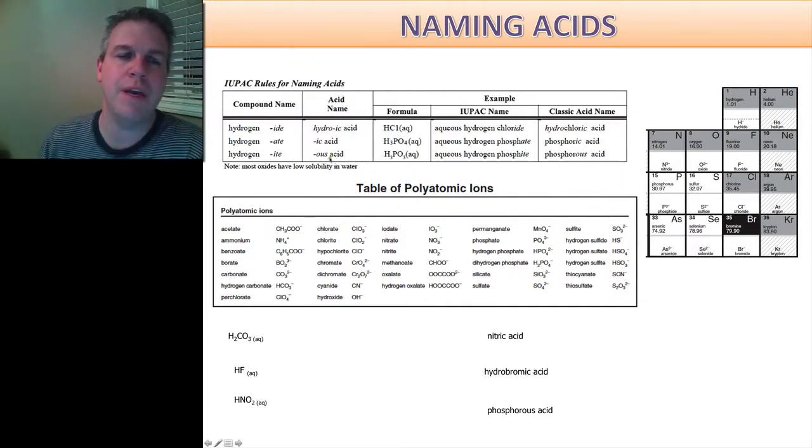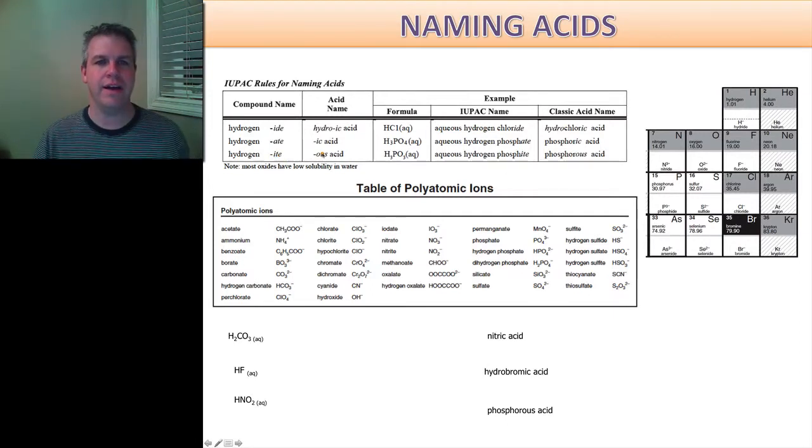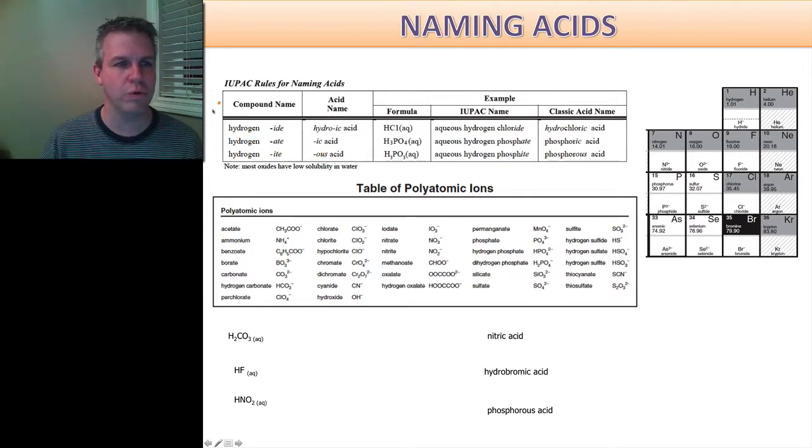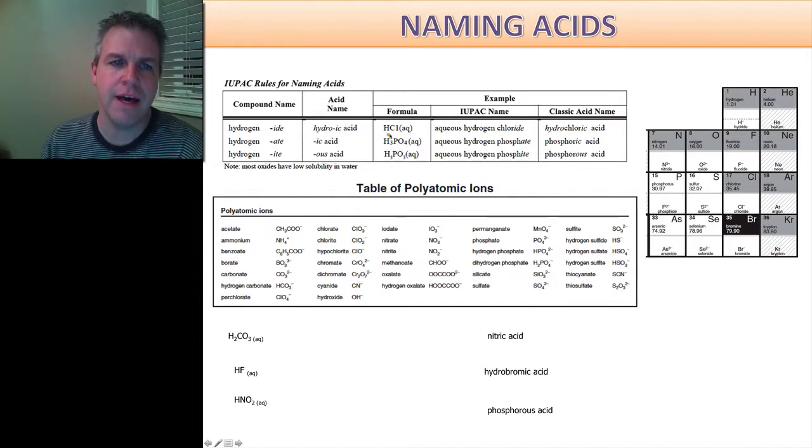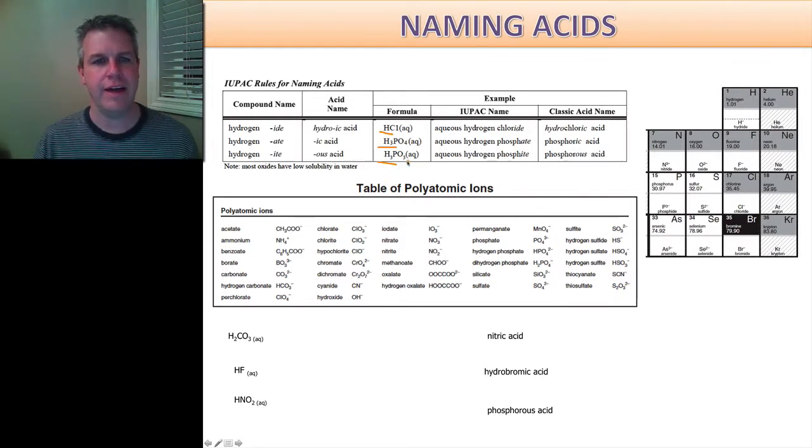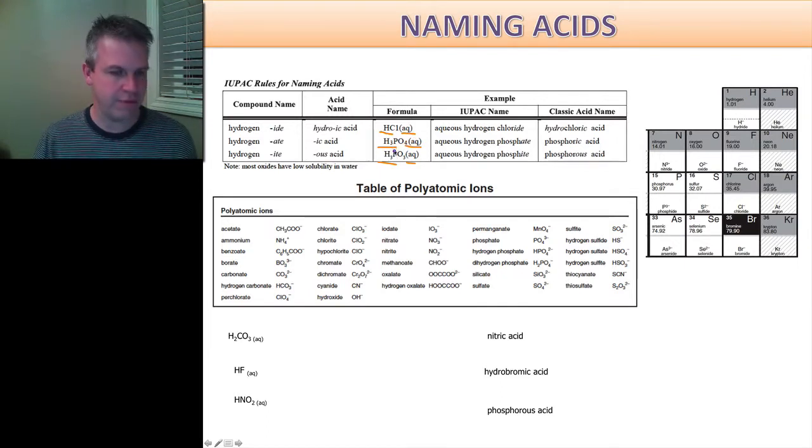So when we name acids there are basically three different ways that we can name them and all the rules are here. It's based on the compound name. When we name the compound, that's what gives us the idea of how to name the acid. How are acids recognized? Well they all have hydrogen in them and they all start with hydrogen. And you'll also always see that it's aqueous, so it's in a solution. So let's move right into how to name these.